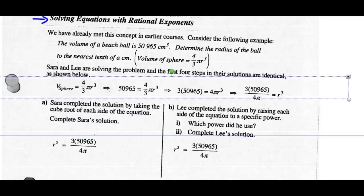The volume of a beach ball is 50,965 cubic centimeters. Find the radius to the nearest tenth. Sarah and Lee are solving the problem. Here's our formula. Substitute the volume in. Multiply both sides by 3. Divide both sides by 4 pi. We've got an equation for r cubed.